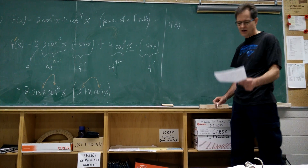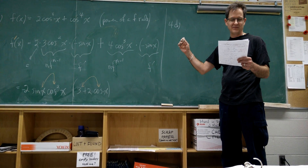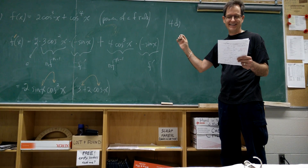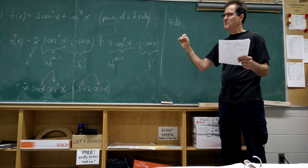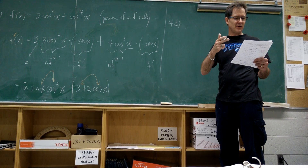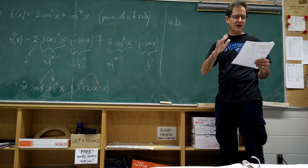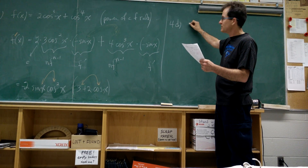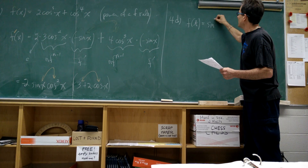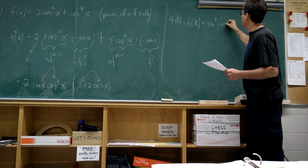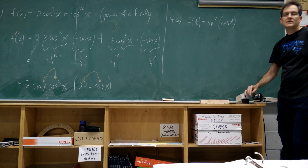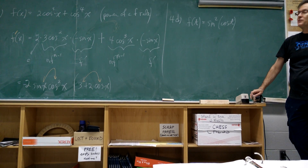We're going to use the chain rule to differentiate. What does number 4 say? It doesn't say with respect to x, so it's not the same as any of the other questions. The function is f of t equals sine squared of cos of t. How do we differentiate this one?